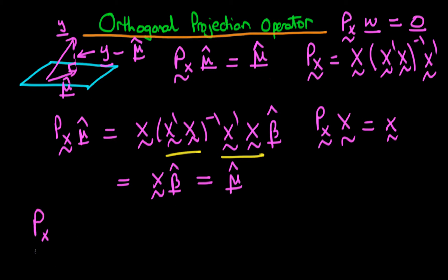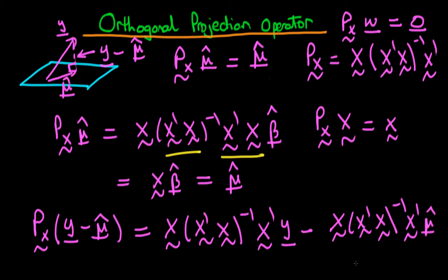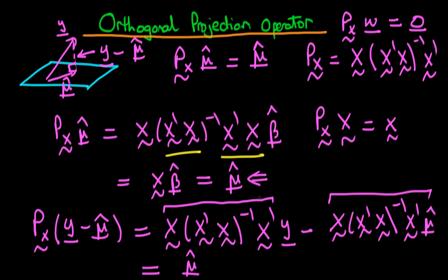So if we take P(X) and multiply it by (Y - μ̂), we expect to get zero. Substituting in for P(X), we get X(X'X)⁻¹X'Y minus X(X'X)⁻¹X'μ̂. This first term should look familiar — it is actually the definition of μ̂, since μ̂ is P(X) applied to Y. So the first term just yields μ̂.